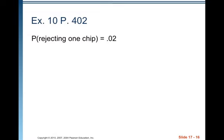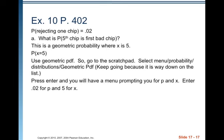Let's start on page 402 with exercise 10. Suppose a computer chip manufacturer rejects 2% of the chips produced because they fail pre-sale testing. So the probability of rejecting any one chip is 0.02. Question A asks, what's the probability that the fifth chip you test is the first bad one you find? That is going to be a geometric probability where X is 5. It's geometric because you are finding the probability that the first success occurs on some specific trial.